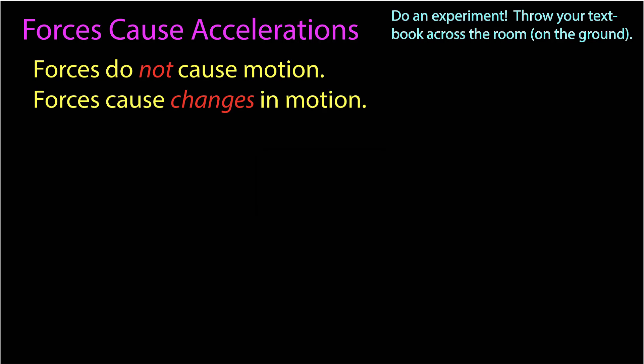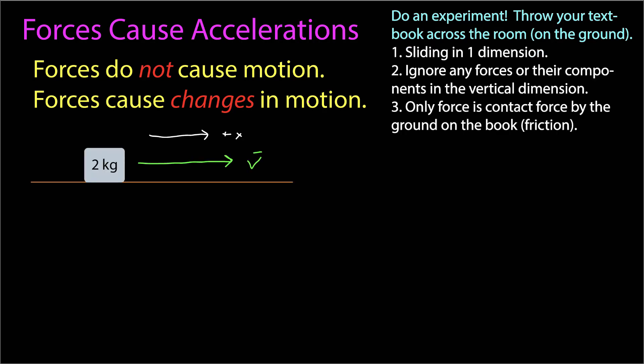What did that look like? So you gave the book some velocity, and when it started sliding, it got slower and slower until it finally came to a rest. After it left your hand, it had some motion, and it was a force due to friction which slowed it down.